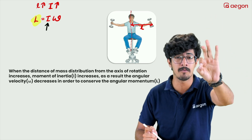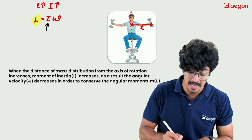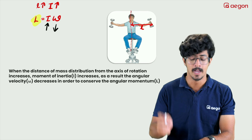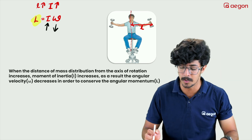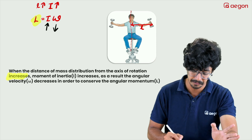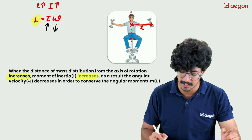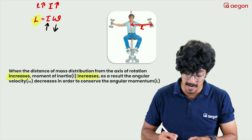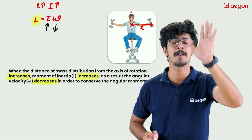If we conserve the angular momentum, we will decrease our angular velocity. When the distance of mass distribution from the axis of rotation increases, the moment of inertia also increases. As a result, the angular velocity decreases in order to conserve the angular momentum.